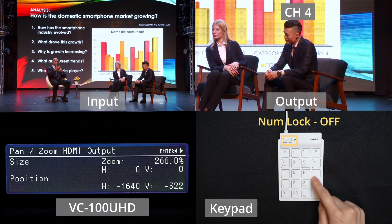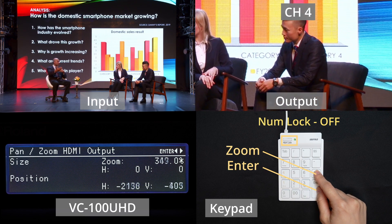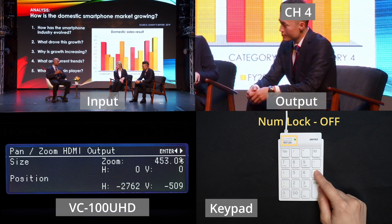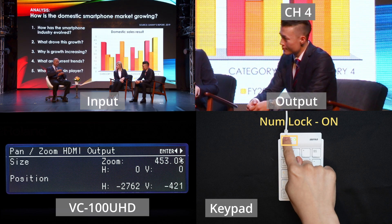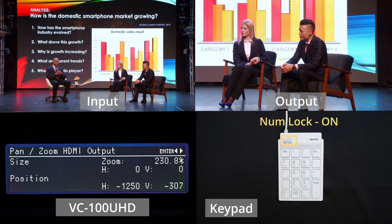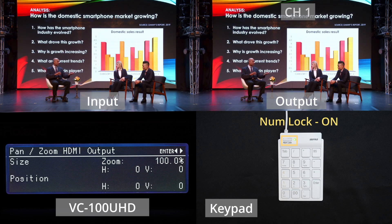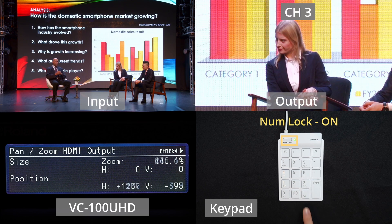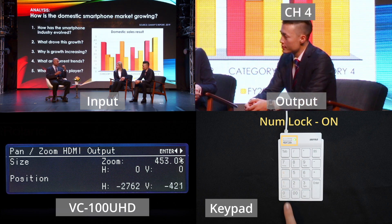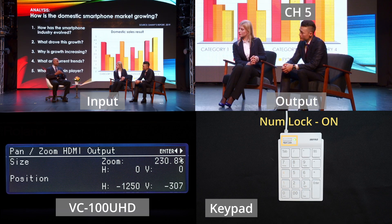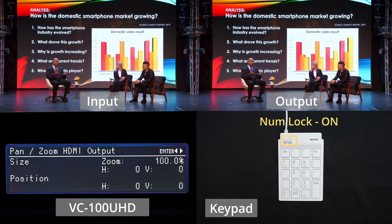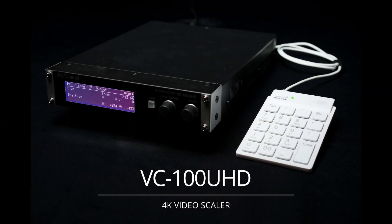You can increase the zoom up speed by pressing the plus button and enter button at the same time. When all channels are set up, use the number keys to switch channels. The VC100UHD's high quality region of interest scaling creates the realistic effect of switching between multiple cameras.